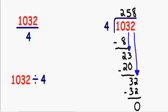So now I want you to notice that after we brought down our last number, we brought down our last number 2, we got a remainder of 0. So after you bring down your last number, if your remainder is 0, that means you're finished with the problem. So our final answer is 258. 1032 divided by 4 is 258.